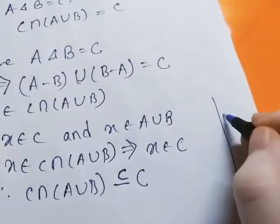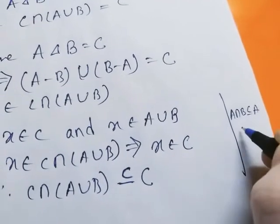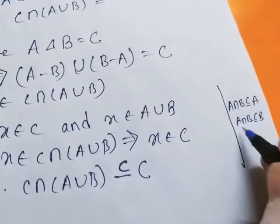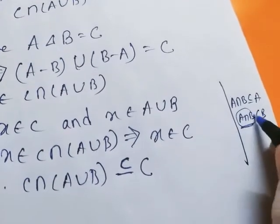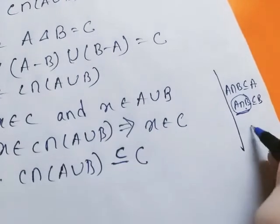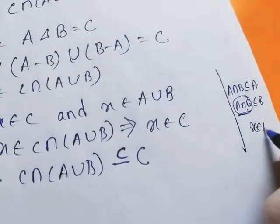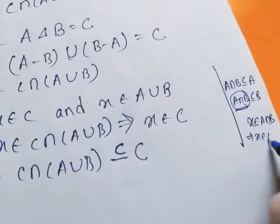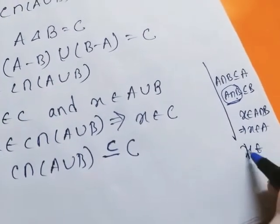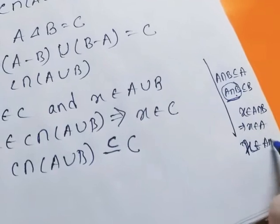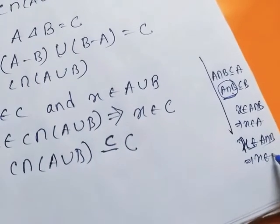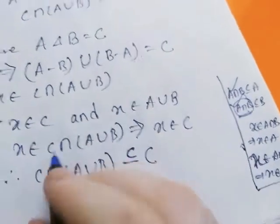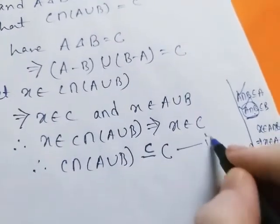We know that the intersection of two sets is a subset of each. A intersection B contains those elements which belong to both A and B. If x belongs to A intersection B, then obviously x belongs to A, and also if x belongs to A intersection B, then obviously x belongs to B. We name this result (1).